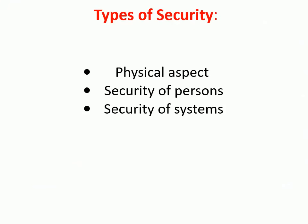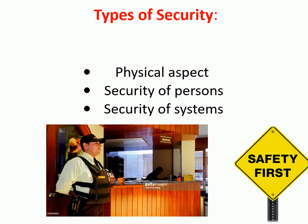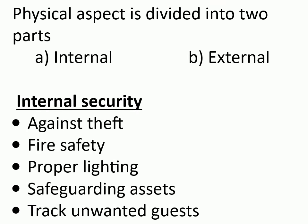Types of security: physical aspect, security of persons, security of systems. The physical aspect is divided into two parts: internal and external. Internal security covers: against theft, fire safety, proper lighting, safeguarding assets, and tracking unwanted guests.